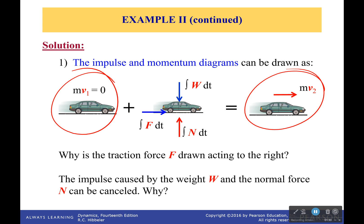Now it says right here that the impulse caused by the weight and the normal force can be cancelled. And you might be wondering why? Well, it's because they are equal and opposite in direction. There is no force going down.